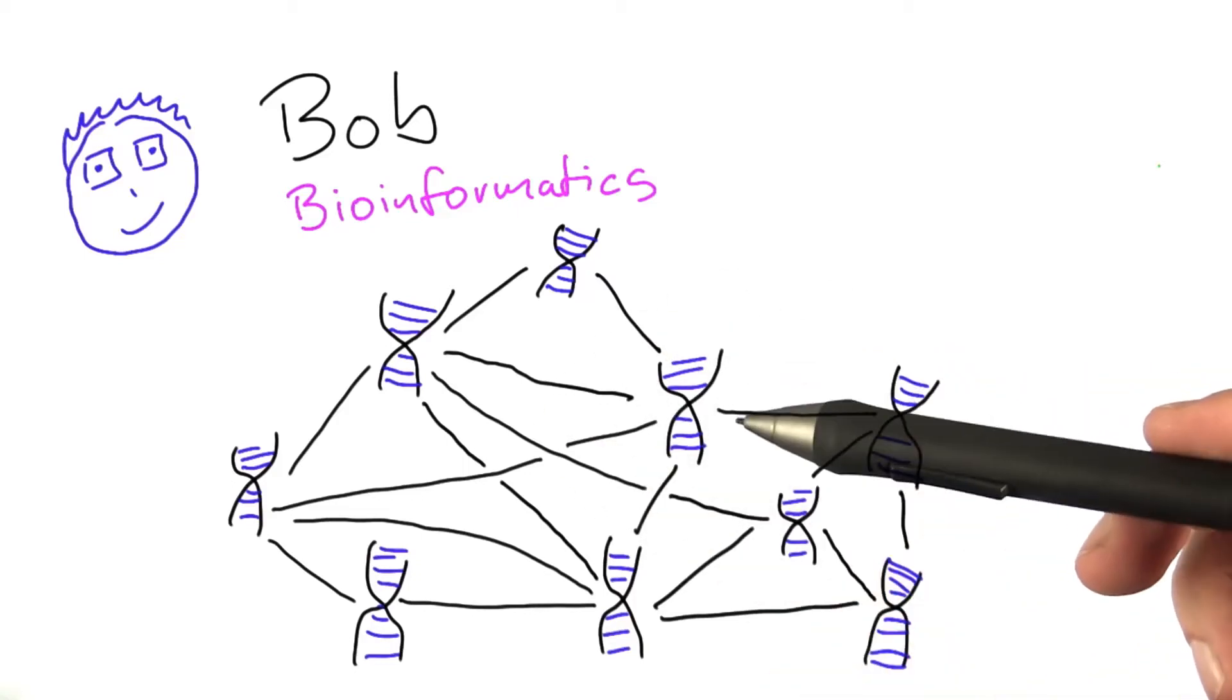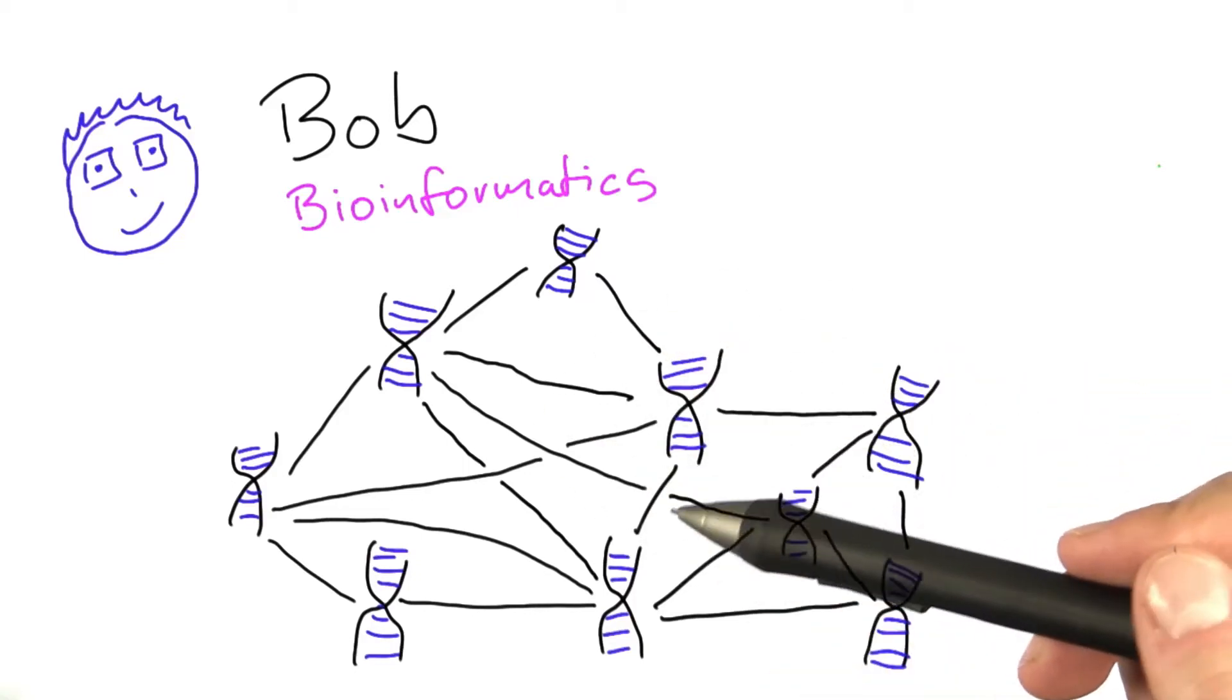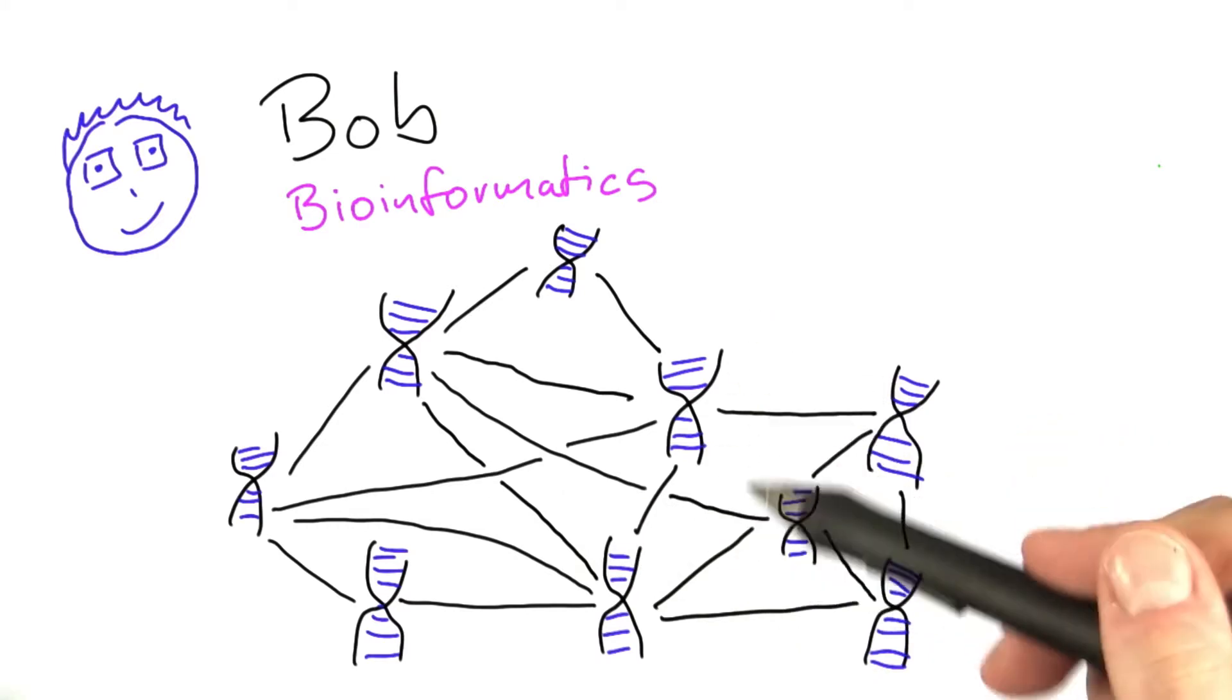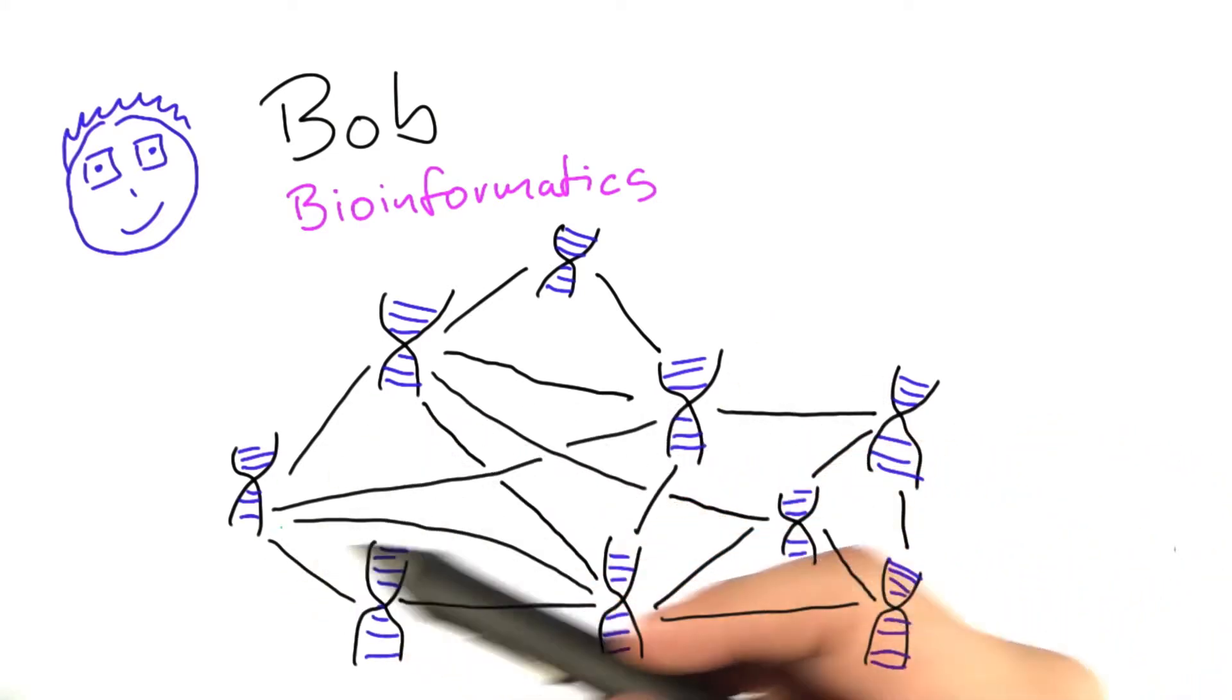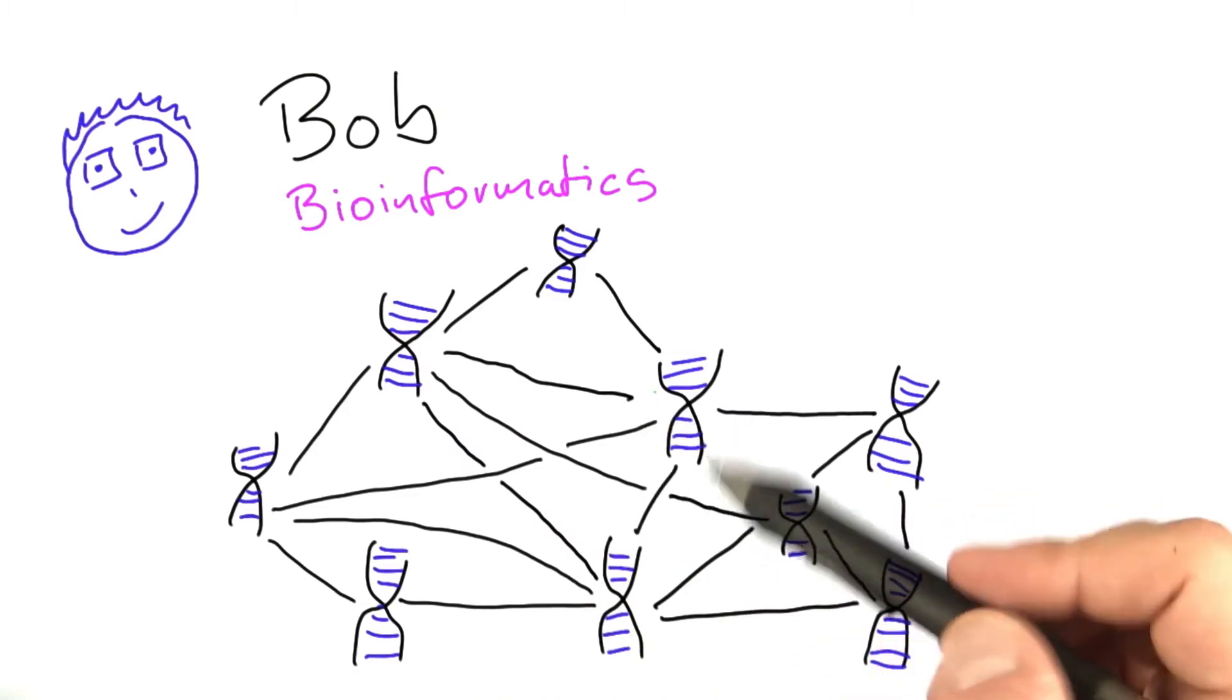Similar to Alice, Bob has been asked to design an algorithm that will find these large groups of genes because, as I'm sure you'll already have noticed in this quiz, it's rather difficult to find these large groups.